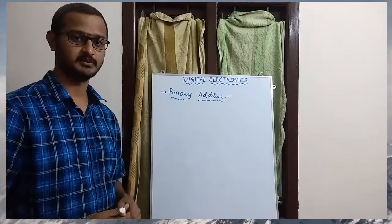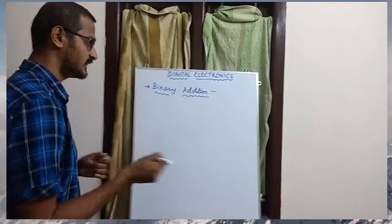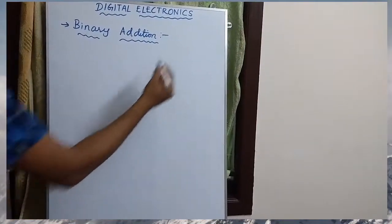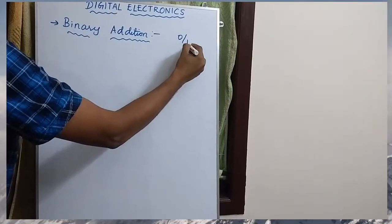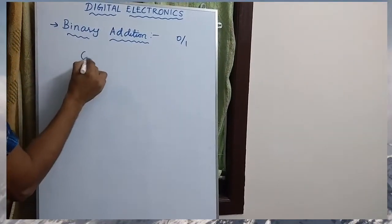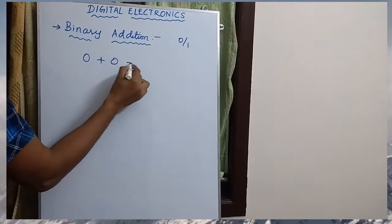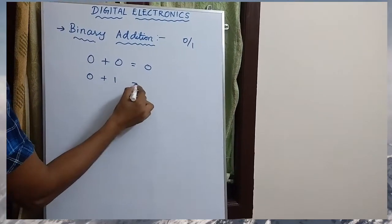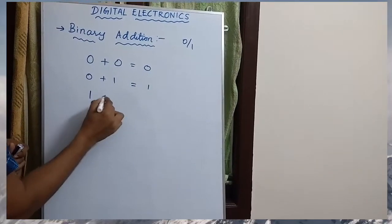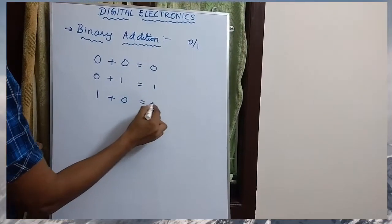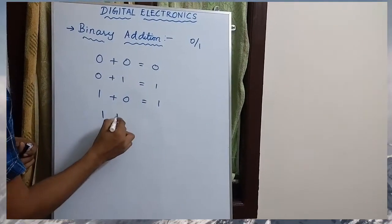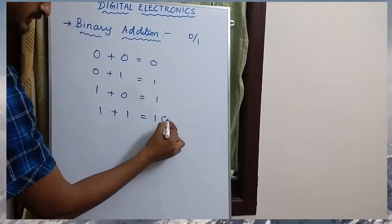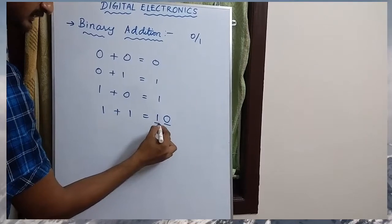Binary Addition. There are only 2 digits, either 0 or 1. The basic rules are: 0 plus 0 equals 0, 0 plus 1 equals 1, 1 plus 0 equals 1, and 1 plus 1 equals 10 in binary.